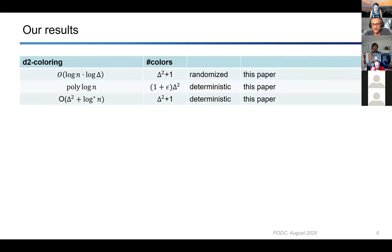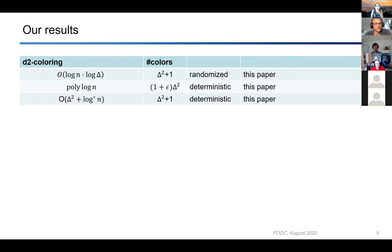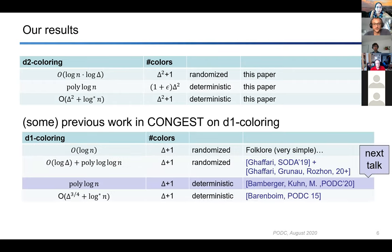Our results are three different algorithms. The first is a randomized algorithm that colors with Δ² + 1 colors in O(log n · log Δ) time. The second is deterministic, uses a constant fraction more colors, and has polylog n runtime. The third is deterministic, uses Δ² + 1 colors, and has runtime polynomial in Δ. There is no previous work, as far as I know, on distance-two coloring in the Congest model, but there is some work on distance-one coloring.